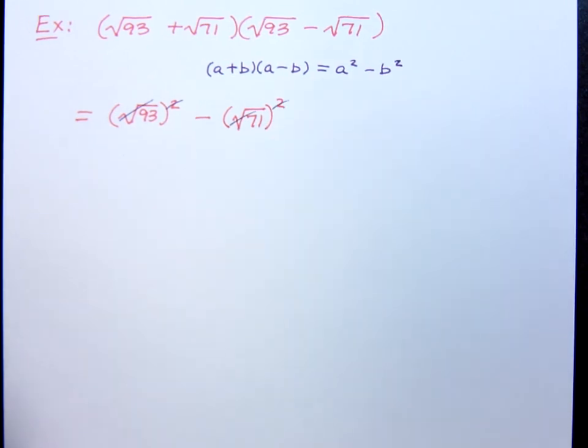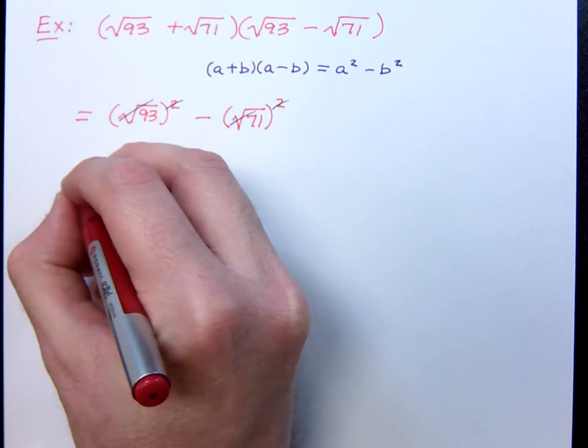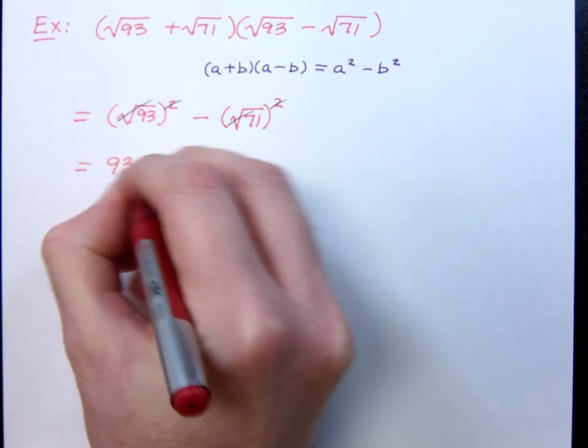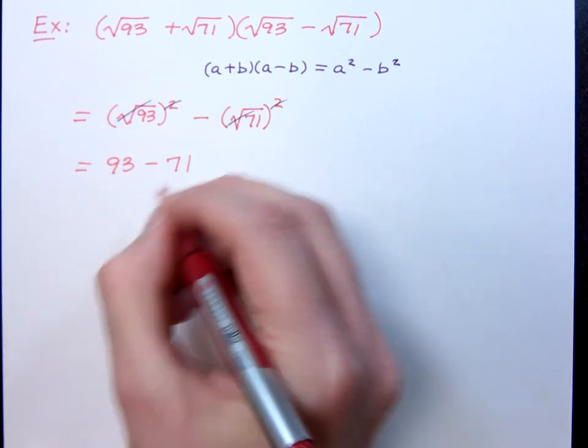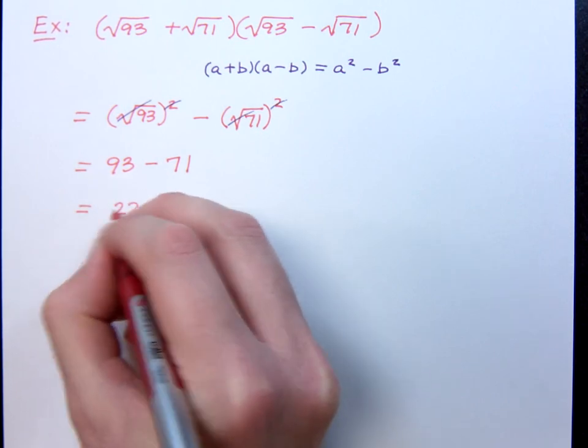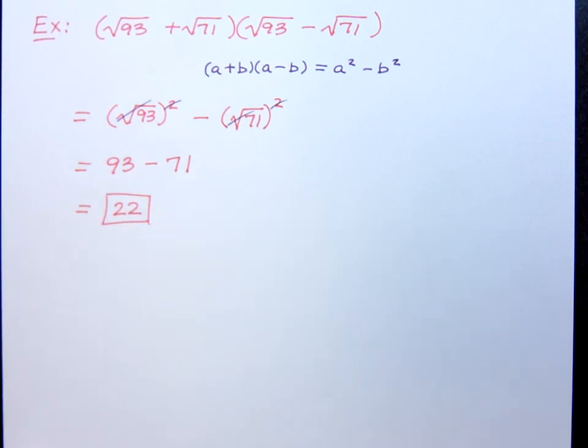So, that guy's also going to reduce away. So, what do you really have here? 93 minus 71. You have 93 minus 71, which is just what? That's just 22.